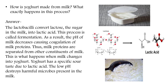When the fermentation process happens, the pH of milk decreases, causing coagulation of milk protein. pH is a measuring scale used for checking the acid content of any substance. When fermentation happens with the help of lactobacilli, milk is converted into yogurt. Yogurt becomes acidic due to low pH. Milk proteins are separated from other constituents of milk, which causes coagulation — it forms more solid particles. Yogurt has a specific sour taste due to lactic acid, and the low pH destroys harmful microbes.